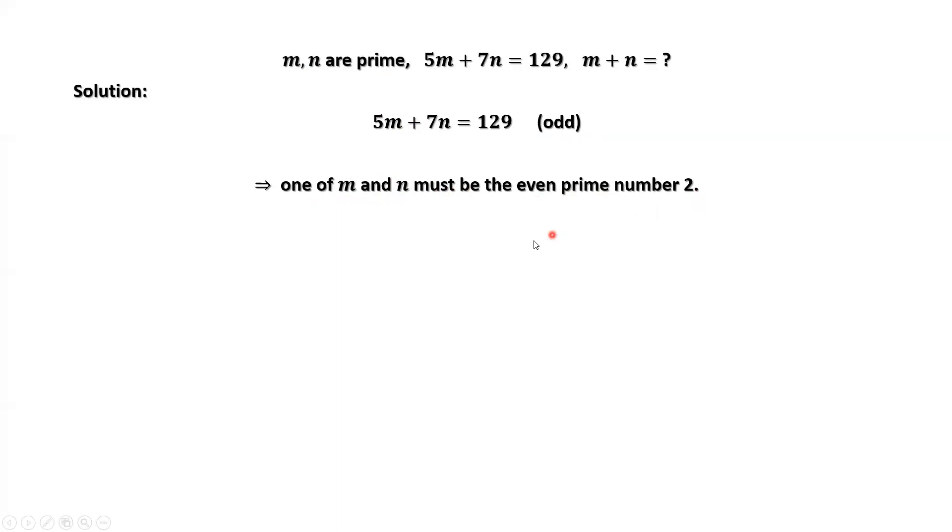Two situations. If m equals 2, we replace m by 2 in this equation. We have 5 times 2 plus 7 times n equals 129. Solving this equation, we have n equals 17.